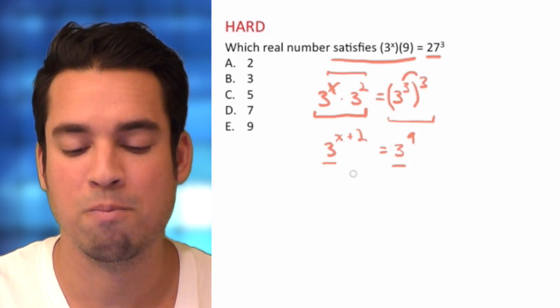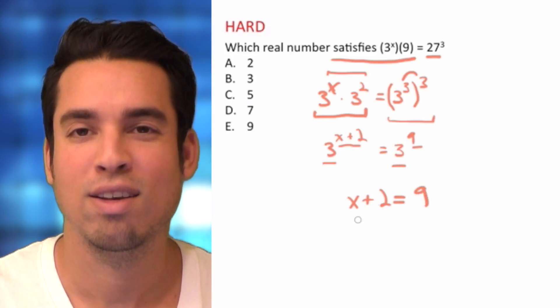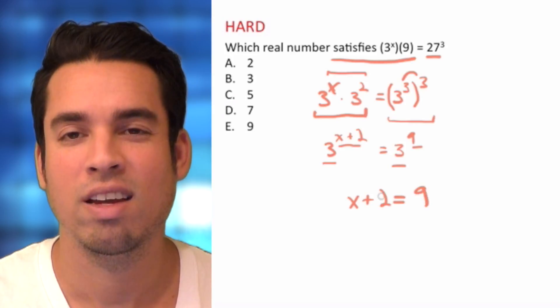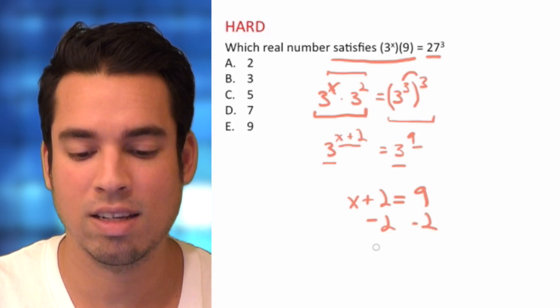we can just basically set up an equivalency with the exponents. So that means this becomes x plus 2 equals 9, simple single variable expression that we can solve. Subtract 2 from both sides,